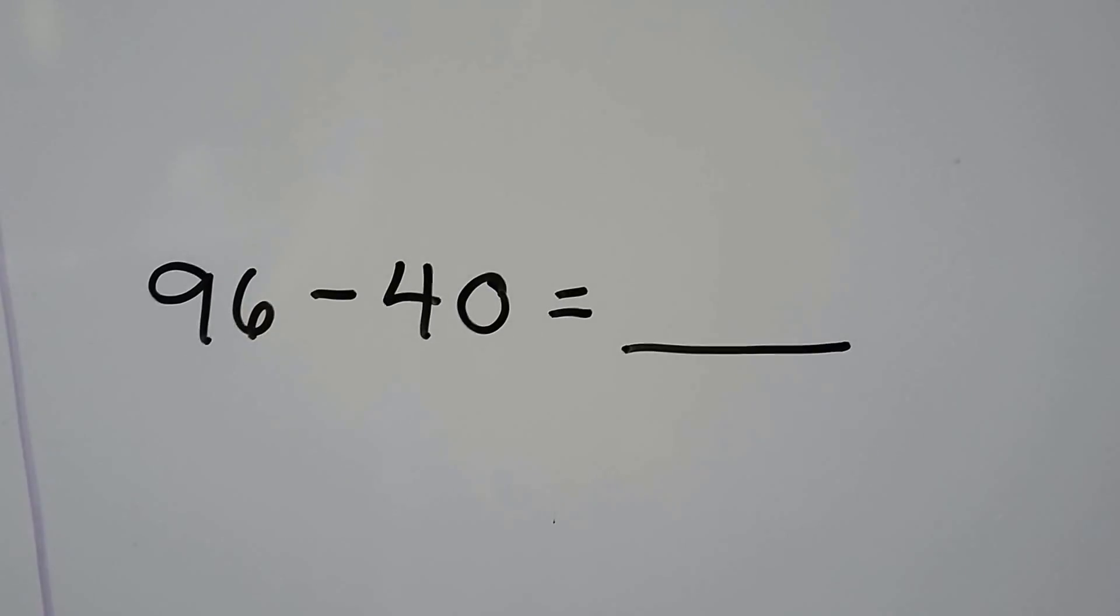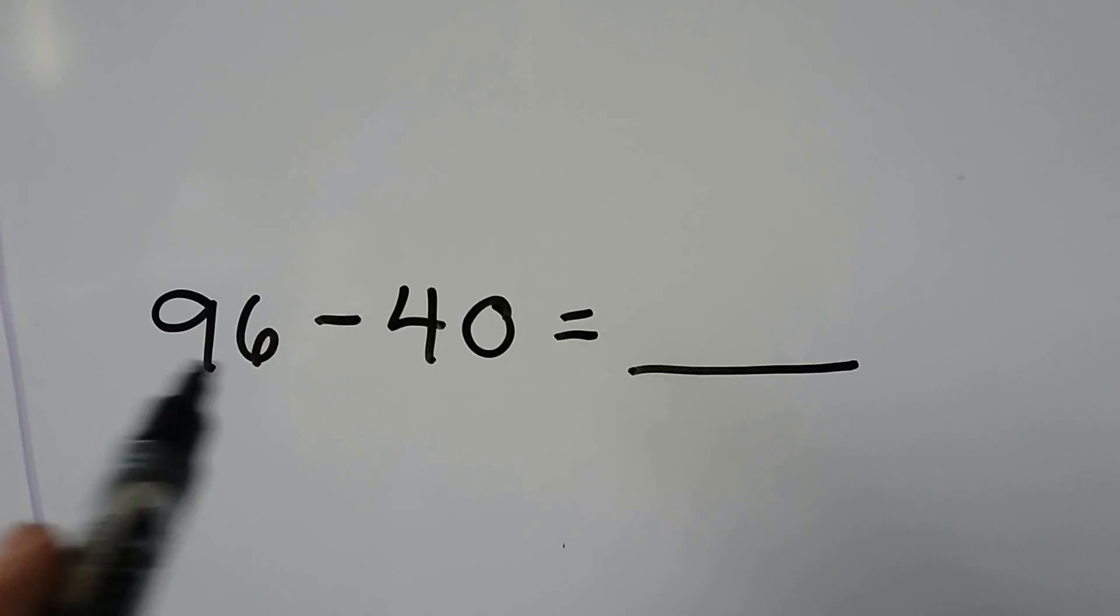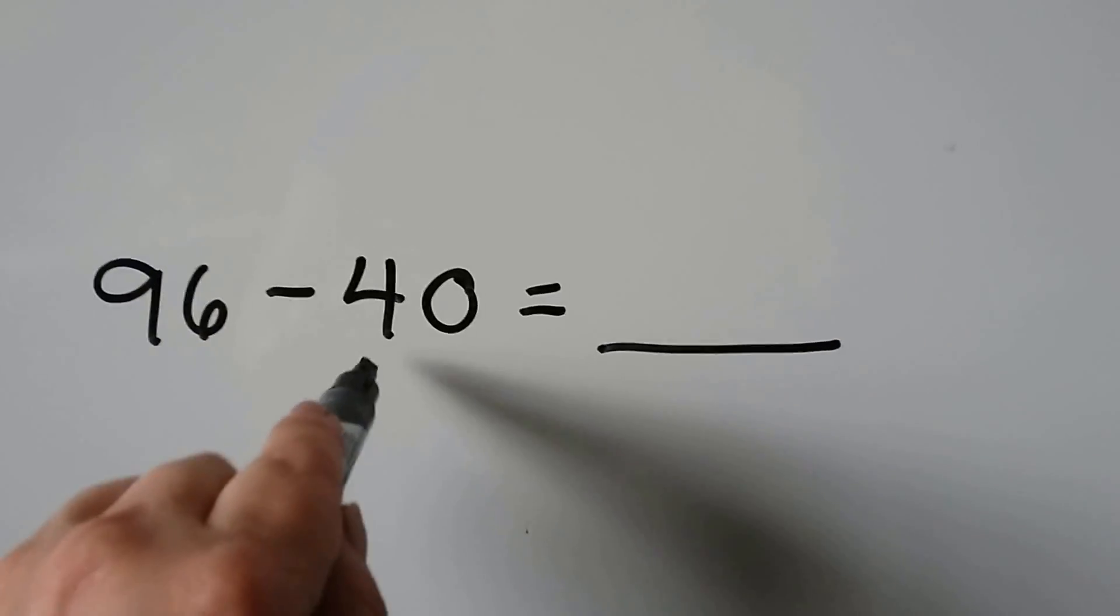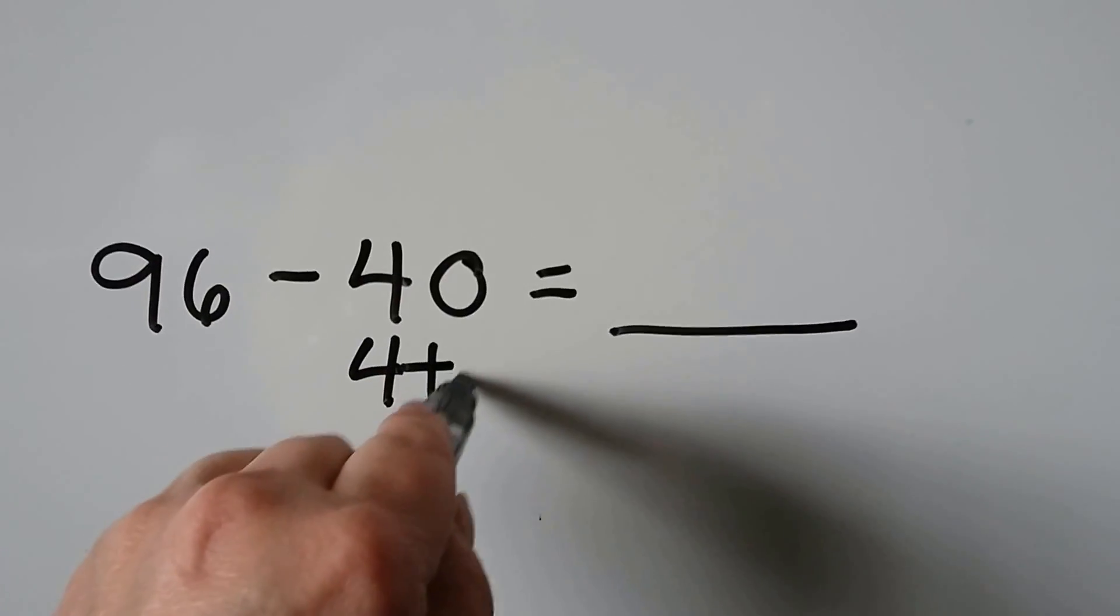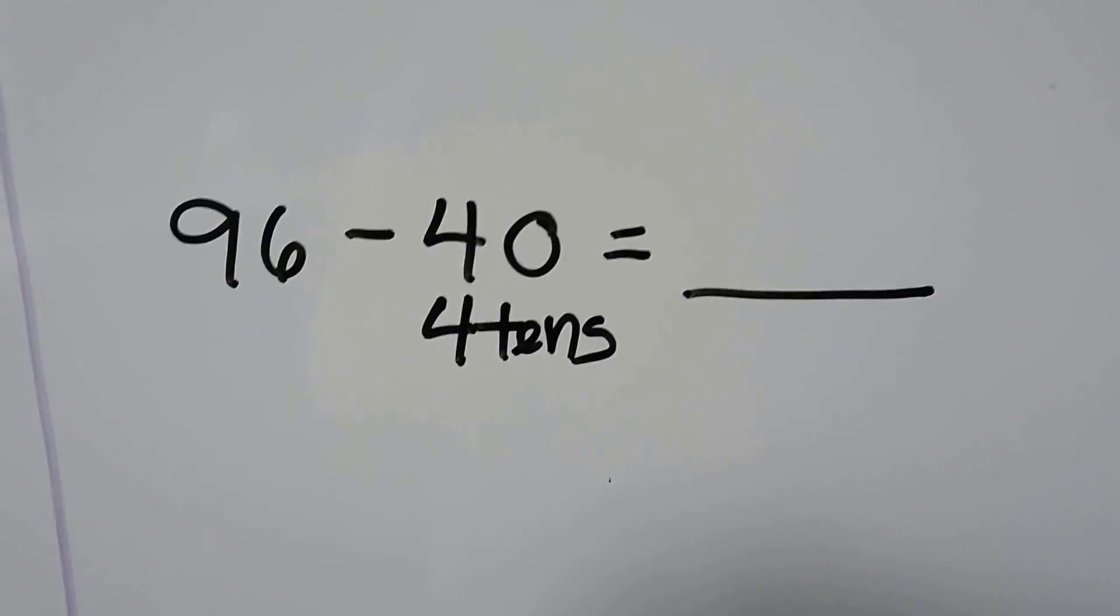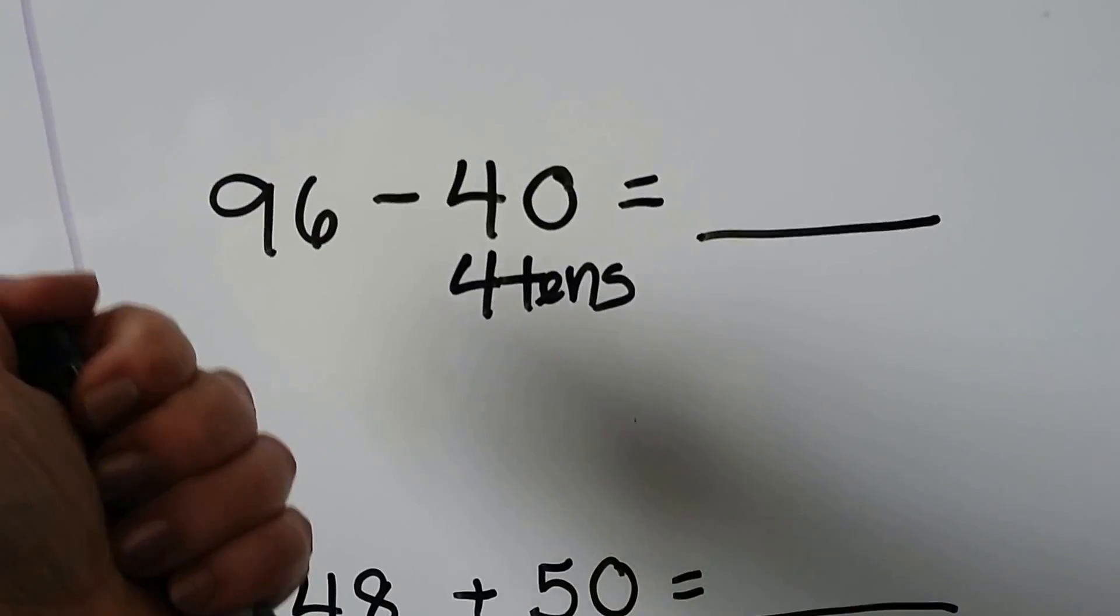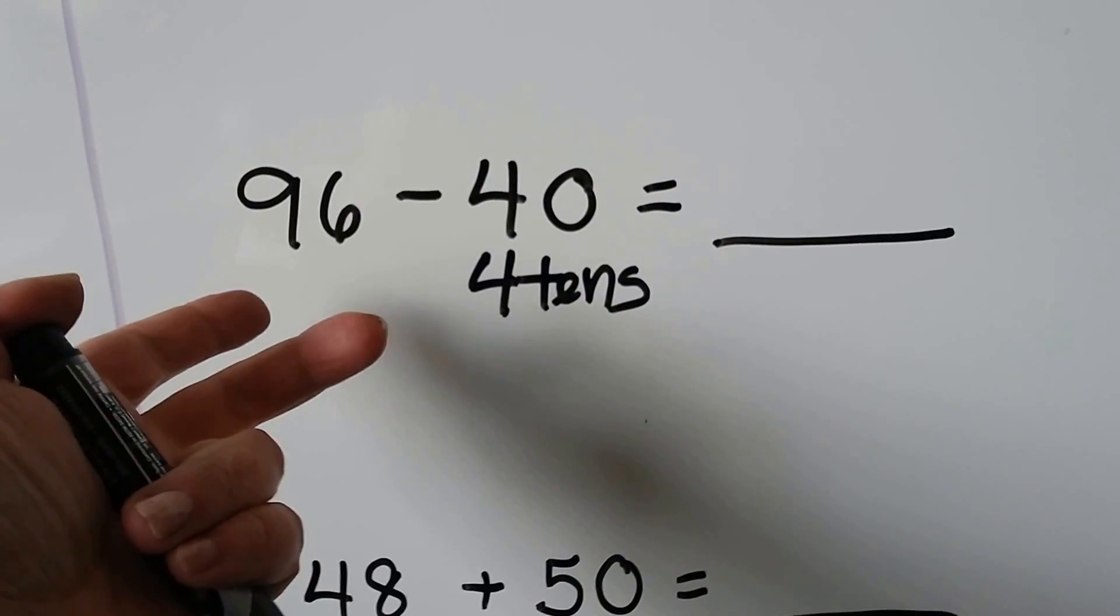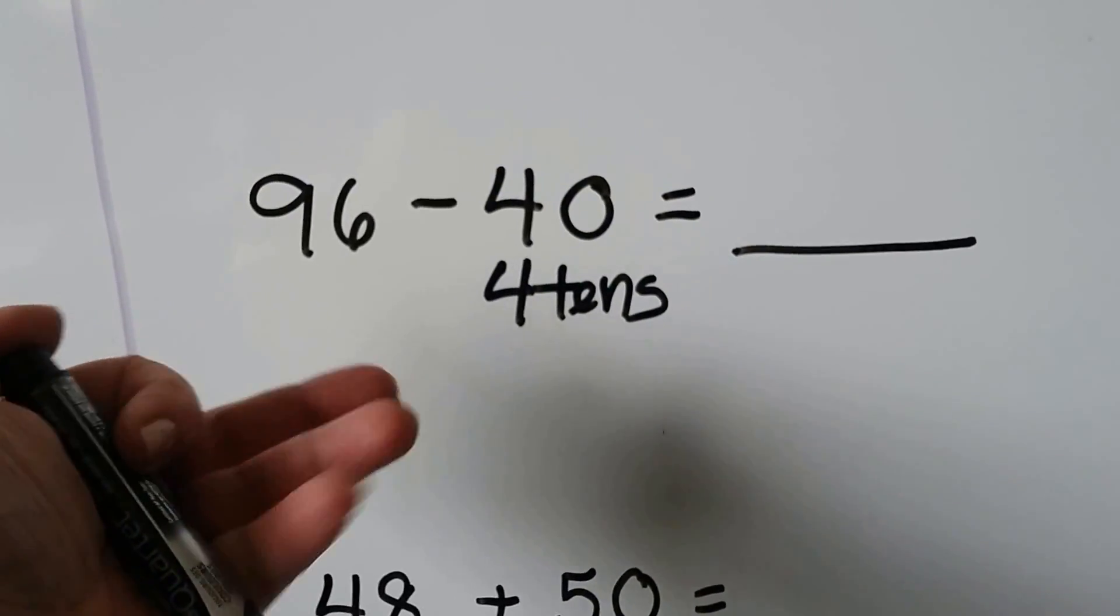Here we're going to count back 4 10s. We start with 96 and count back 4 10s. 96, 86, 76, 66, 56.